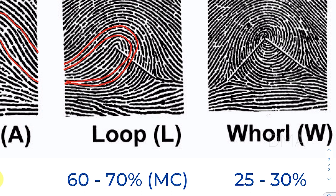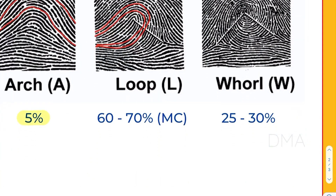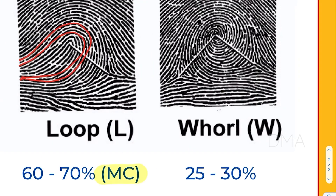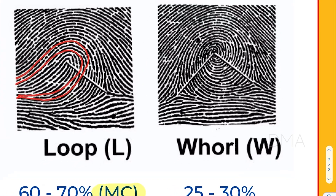that is, it starts from one side and ends on the same side. That is a loop pattern, and this can be seen in 60 to 70 percent of the population, making it the most common fingerprint pattern in human beings. Then finally we have the whorl pattern.